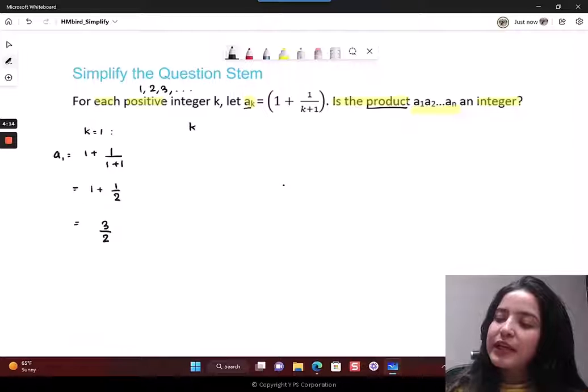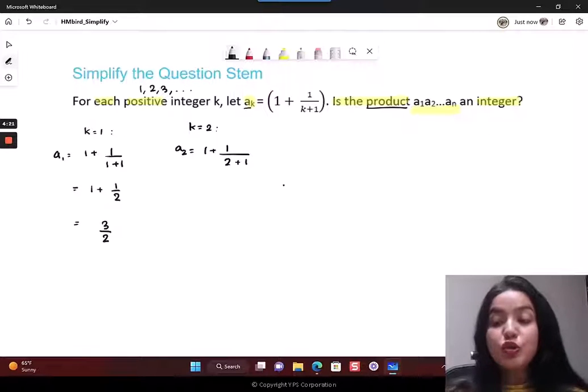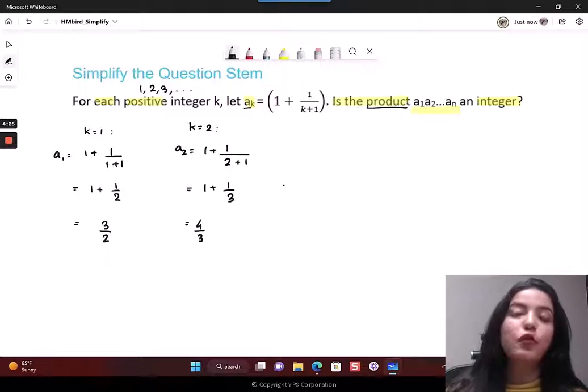Similarly, you can get the second term by putting k equal to 2. So a2 is going to be 1 plus 1 upon 2 plus 1. I'm just putting 2 in place of k. You do the addition, you get 4 by 3.